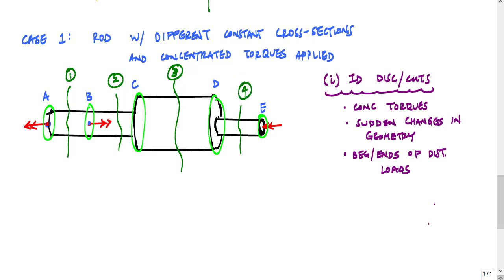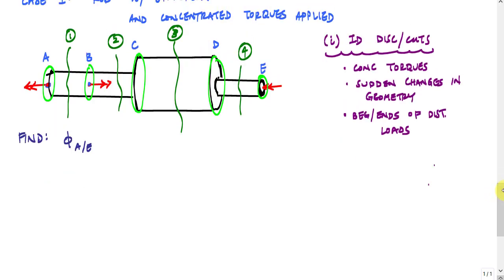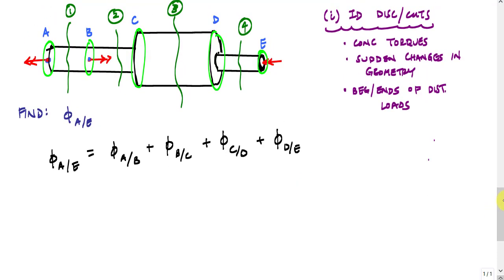A lot of times I want to find the angle of twist of end A with respect to end E. And I can use my discontinuities. Identifying these discontinuities helps me identify what segments I need to pay attention to. So in this case, this angle of twist of A with respect to end E would be the angle of twist of segment AB, or A with respect to B, plus the angle of twist of BC, plus the angle of twist of CD, plus the angle of twist of DE. So all my segments are defined by the discontinuities.